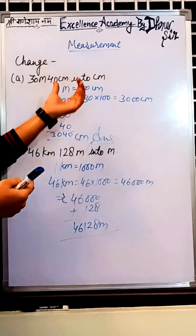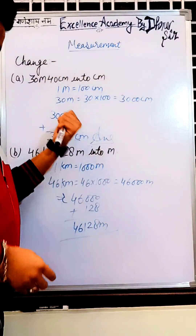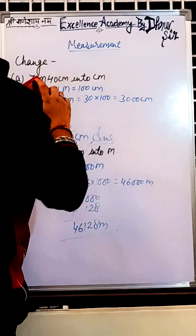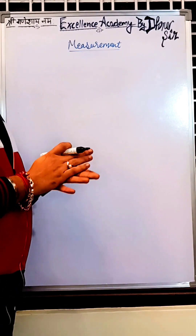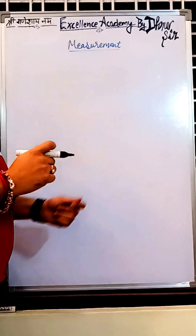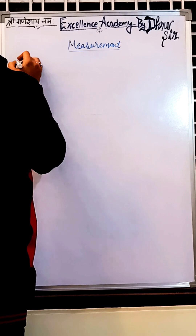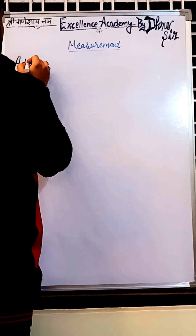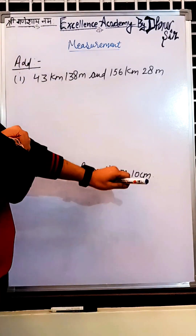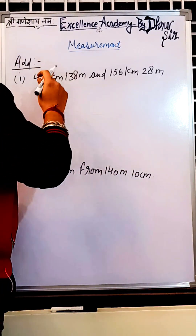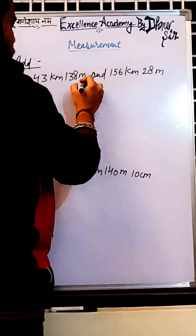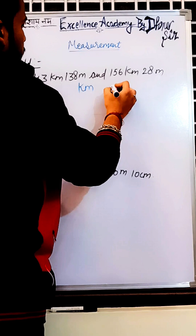Note these questions. Now we will also see some more units — decagram, decigram — and how to change them. I hope you have noted this. Now let's move to addition questions. We have to add 43 kilometer 138 meter and 156 kilometer 28 meter. Make two columns: kilometer and meter.